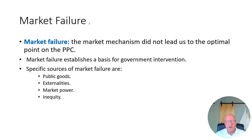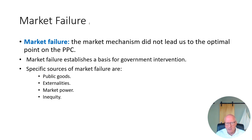Let's look at the mechanisms of market failure. The market mechanism did not lead to the optimal point on the production possibilities curve, so market failure establishes a basis for government intervention. If you can prove the market is suboptimal, you can argue the government needs to step in and change the types of goods and services being produced. What causes a market to fail? There are four concepts: public goods, externalities, market power (otherwise known as monopoly), and inequity or unfairness.